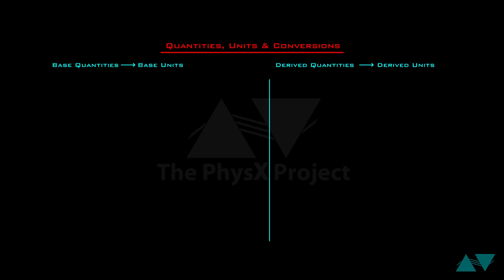What is a base quantity? A base quantity is a fundamental and independent quantity — it does not depend on any other quantity. We can compare it to a primary color. Similarly, a base unit is a fundamental and independent unit; it is not dependent on other units. There are only 7 base quantities along with 7 base units.